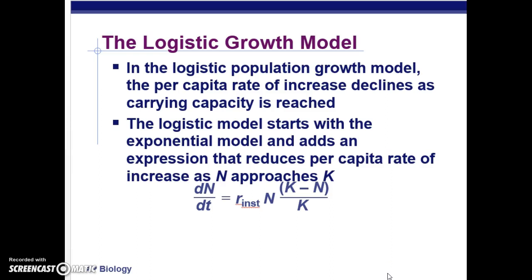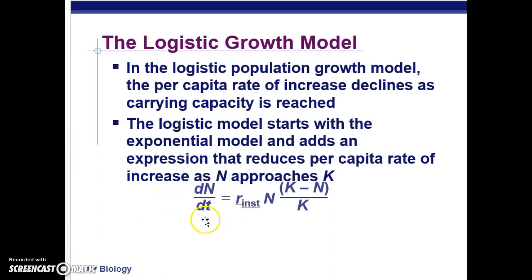For logistic growth, we use a slightly different formula because we need to account for the carrying capacity. The rate of growth equals the per capita rate of growth times the population size, multiplied by (K minus N) over K. This introduces the K value into the formula, allowing us to factor in how close the population is getting to its carrying capacity. As N approaches K, this term causes the population's growth to halt.